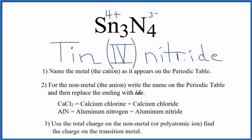If you were given the name and asked to write the formula, you know tin is 4 plus because of the Roman numeral. With tin at 4 plus, you can figure out how many nitride ions you need, since nitride is always 3 minus, so the net charge is zero.